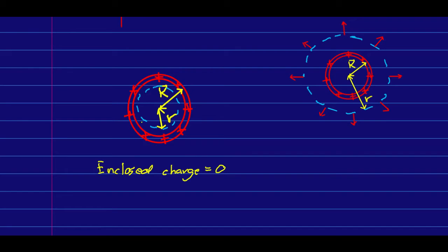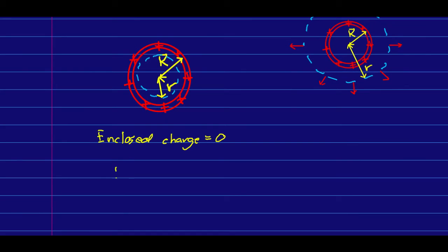And since the E field has to be the same everywhere on here, the only way we can have a total flux through this surface that equals zero, which is the enclosed charge, is if the E field here is zero. And so that tells us that the E field inside the spherical shell has a magnitude of zero.